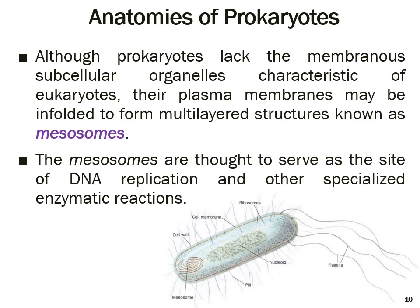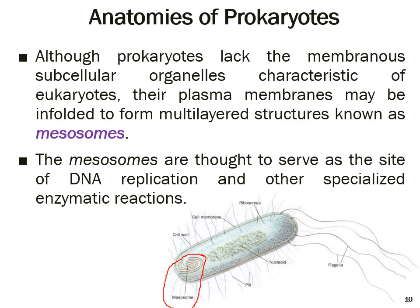Most prokaryotes lack the different organelles found in eukaryotes. However, some have foldings in their plasma membrane called mesosomes, which you can see in the diagram as folded internal membrane structures. Mesosomes are the site of DNA replication and some other enzymatic reactions.